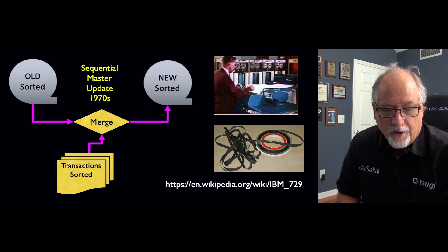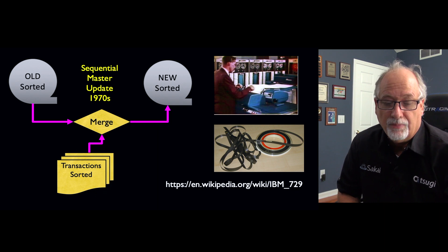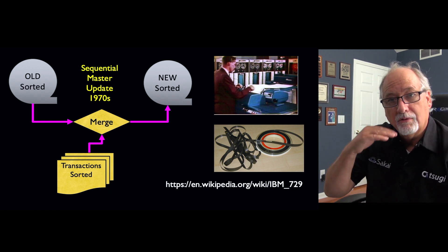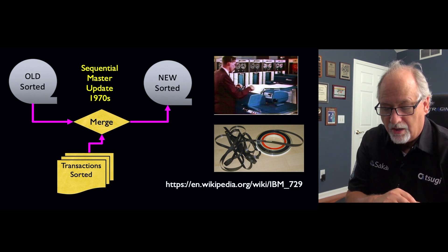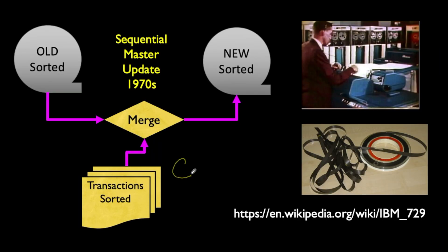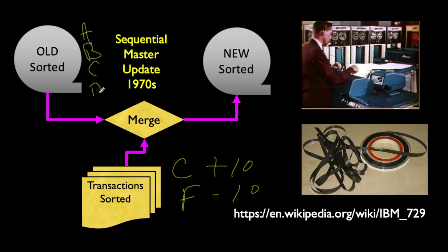This led to a pattern where every night we would take the tape from yesterday's account balances. Let's say we're a bank with people coming to the window, putting in money, taking out money. We would put all the transactions — sometimes on physically punched cards — and then sort them. Let's say we have 26 accounts: person C adds $10, person F subtracts $10, and so on. There were physical machines in the earliest days that would sort these. And we would have the old balances — A, B, C, D, E, F — sitting on a tape in sorted order.